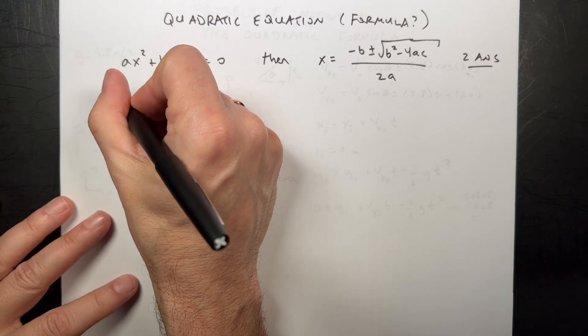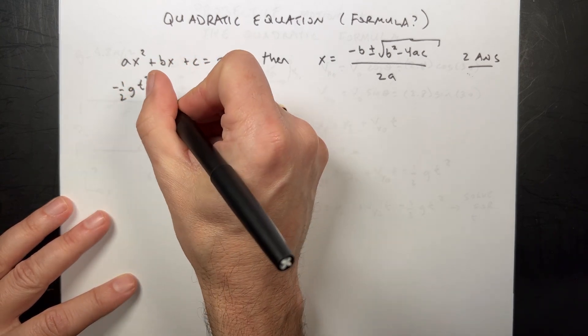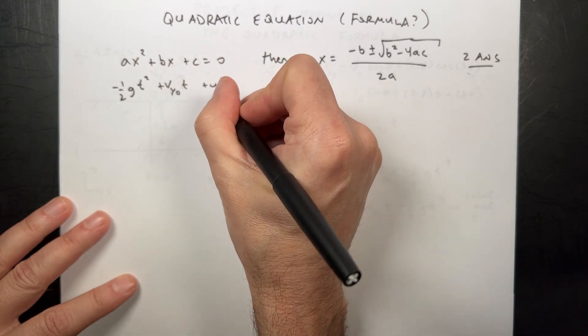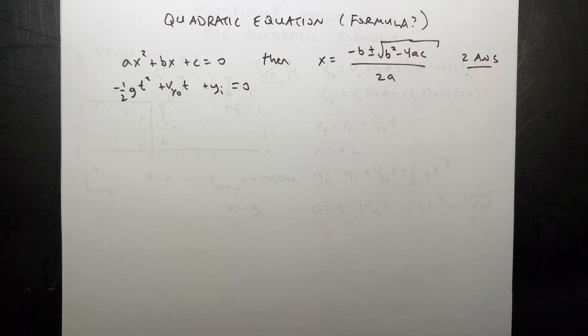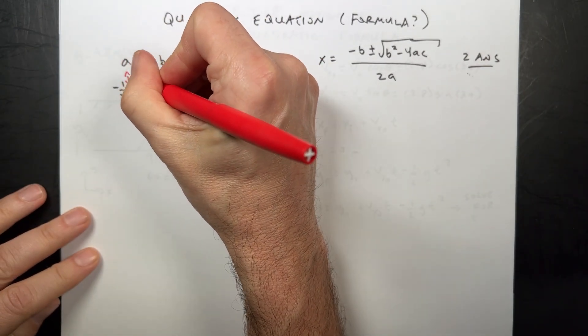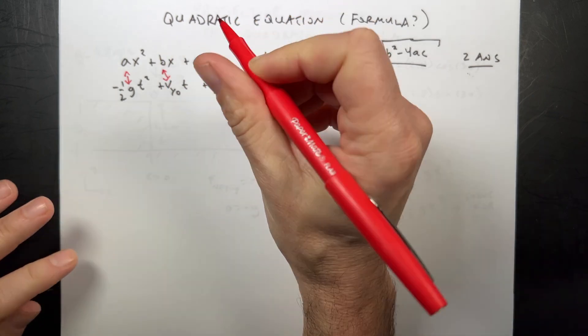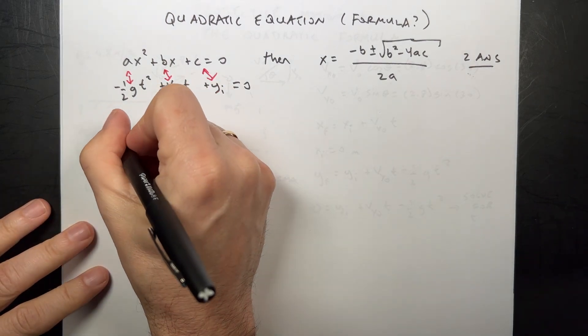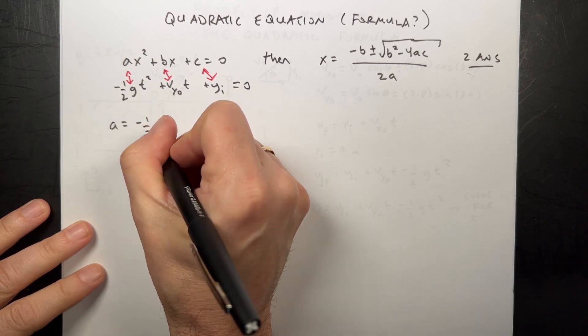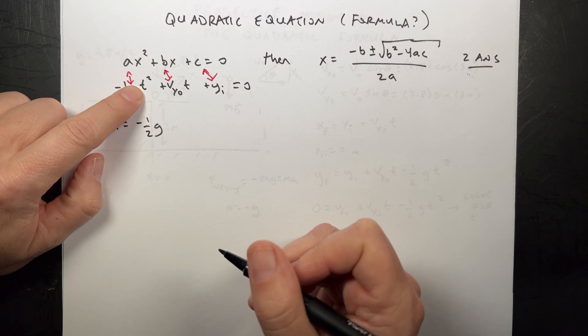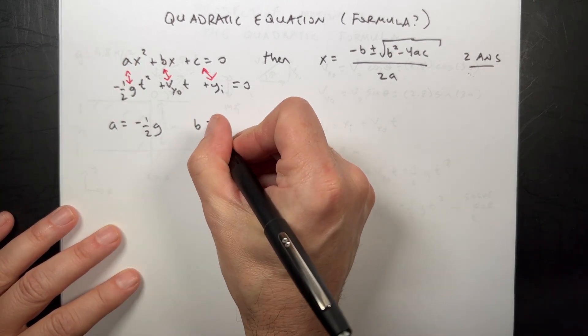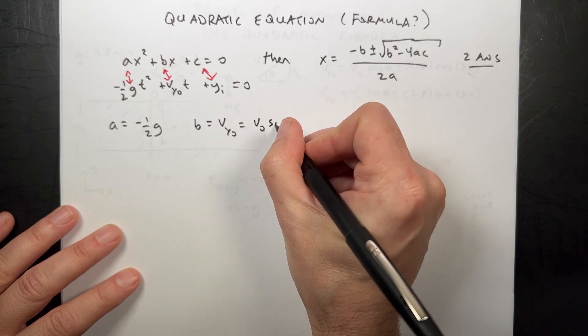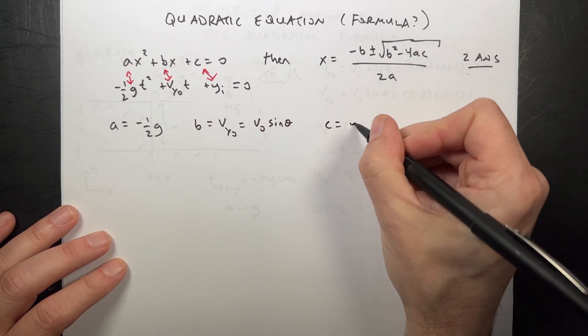Let me write my kinematic equation in a different form: negative one-half g t squared plus vy zero t plus y initial equals zero. I got a red pen. So you see that they match up. So a in that formula is negative one-half g. I'm solving for t, so the a term is the thing in front of t squared instead of x squared. B is vy zero, which is v zero sine theta. C is y initial, just a number.